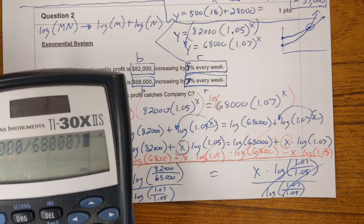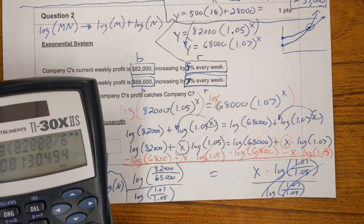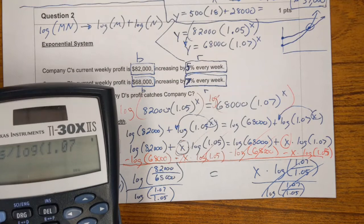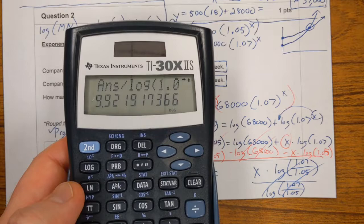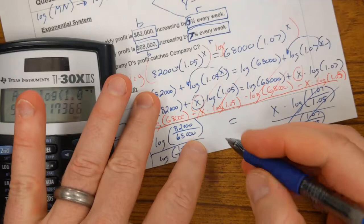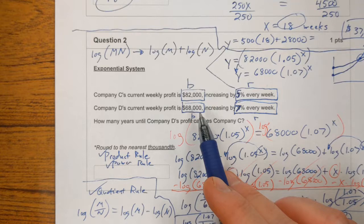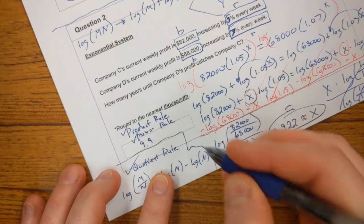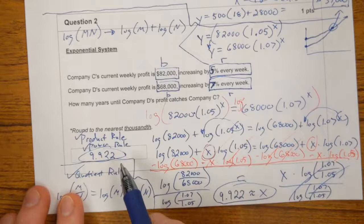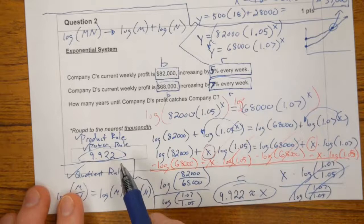Log of 82,000 divided by 68,000. And I'm going to go ahead and hit equal there and kind of get this as a decimal. Now I'm going to divide that answer by the log of 1.07 divided by 1.05. And voila, final answer to the nearest thousandth, 9.922. It's going to take about 9.922 weeks for company D to catch up to company C. I'll write this in the box, 9.922. Don't write the word weeks. Just write the number to the nearest thousandth. That's how we do question 2.